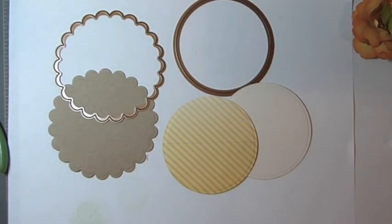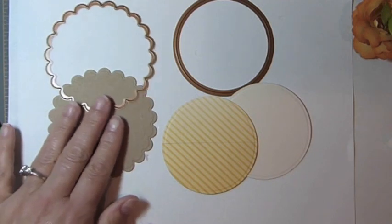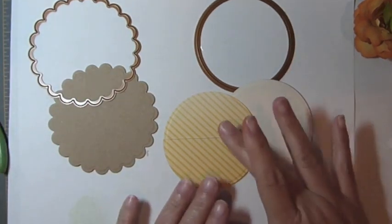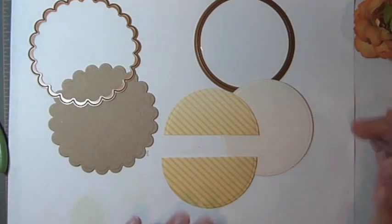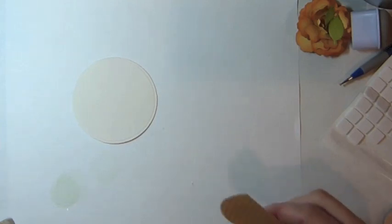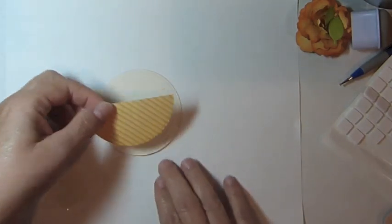Cut and emboss scallop circles small from craft cardstock and classic circles small from patterned paper and ivory cardstock. Trim the patterned paper in half and adhere one piece to the ivory circle.